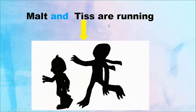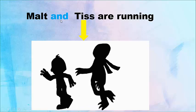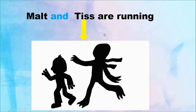Example: 'Malt and teas are running' - this is an example using the conjunction 'and.' We can use many other conjunctions to join two words or sentences.